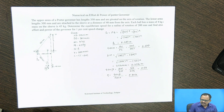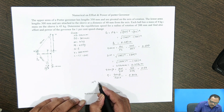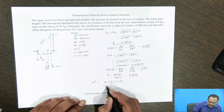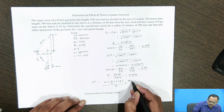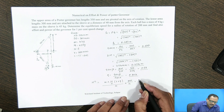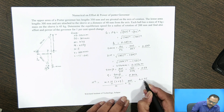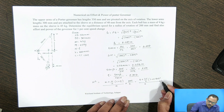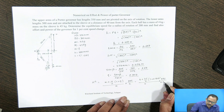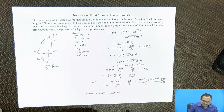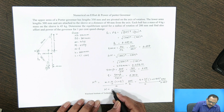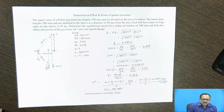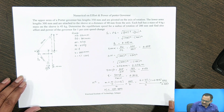Now we can calculate the equilibrium speed of the governor. N squared equals (m plus M divided by 2) times (1 plus q) divided by m, multiplied by 895 divided by h. Putting in the values: mass of ball m is 4 kg, sleeve mass M is 45 kg, q is 0.904, and height h is 0.287. By calculation, the equilibrium speed of the governor is 191 rpm, corresponding to the radius of rotation of 200 mm.